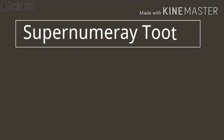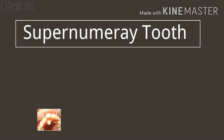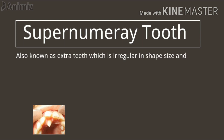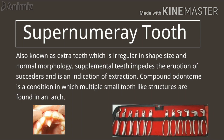Supernumerary teeth, also known as extra teeth, are irregular in shape, size, and normal morphology. Such supplemental teeth impede the eruption of successors and are an indication for extraction. Examples of supernumerary teeth include compound odontomes and complex odontomes. Such teeth should be removed for normal dentition.